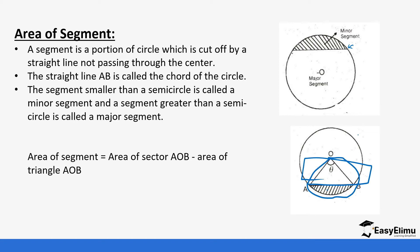For the major segment: once we get the area of the smaller segment, we take the area of the circle minus the area of the small segment and we are left with the major segment. We are going to get an opportunity to do a few questions regarding how we apply this formula.